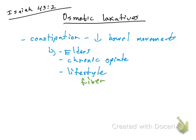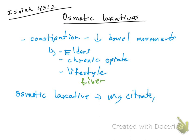Now, if you have a patient who has chronic constipation, sometimes we can give osmotic laxatives. Some of those osmotic laxatives — what do you think they are? One is called magnesium citrate, another one is called polyethylene glycol, and another one is stool softeners.